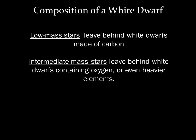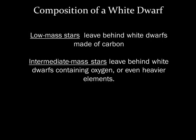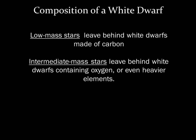The last type of fusion a one-solar mass star like our Sun can do is helium to carbon. Therefore, a white dwarf left behind by a one-solar mass star will be made mostly of carbon. Some intermediate-mass stars can fuse carbon into oxygen, so these stars will have white dwarfs with carbon and oxygen.